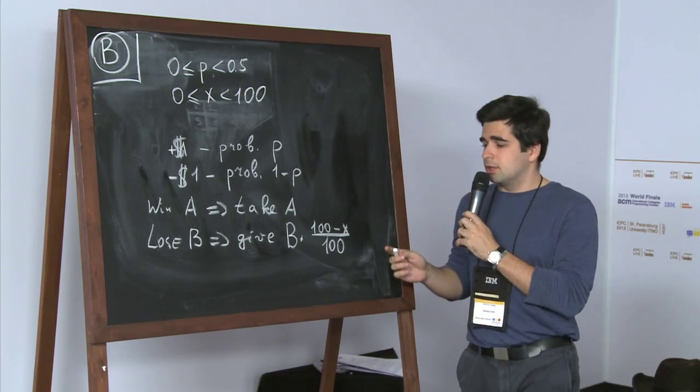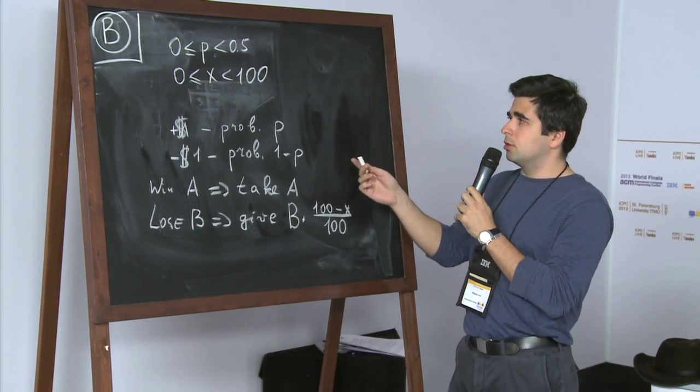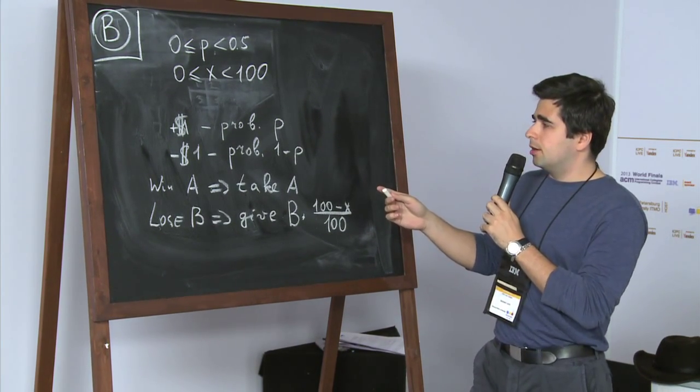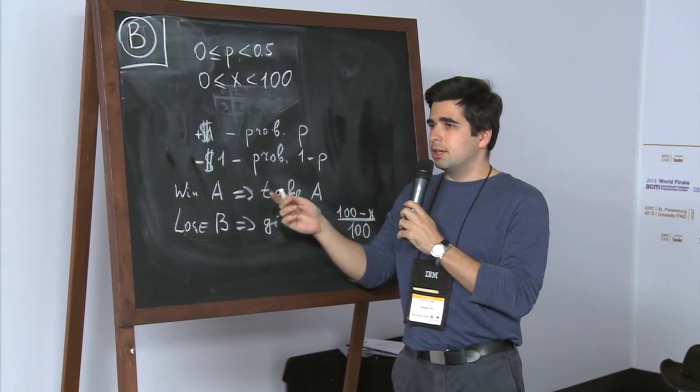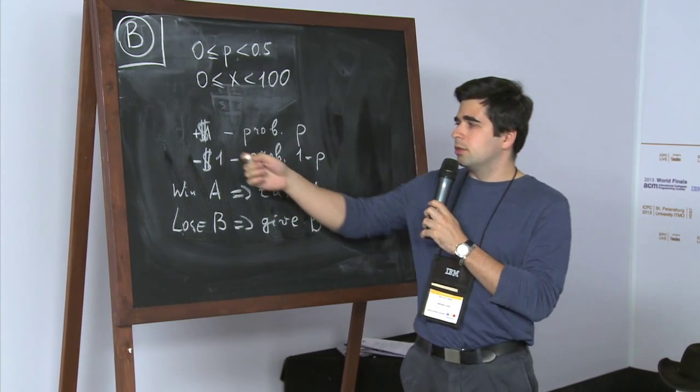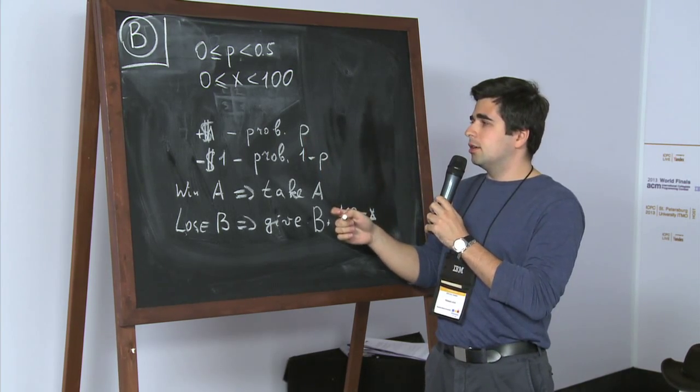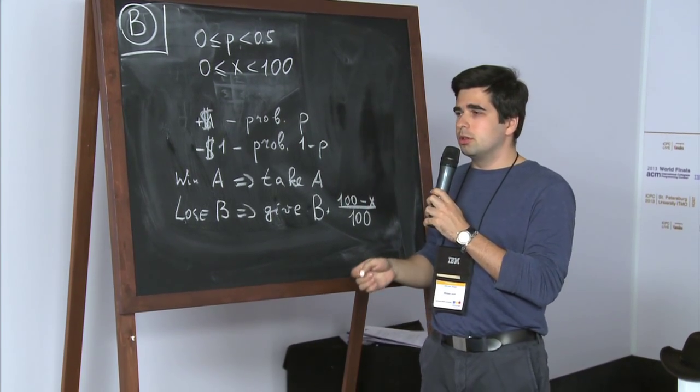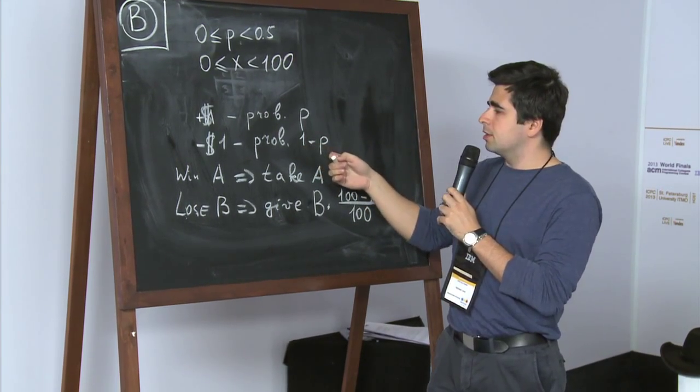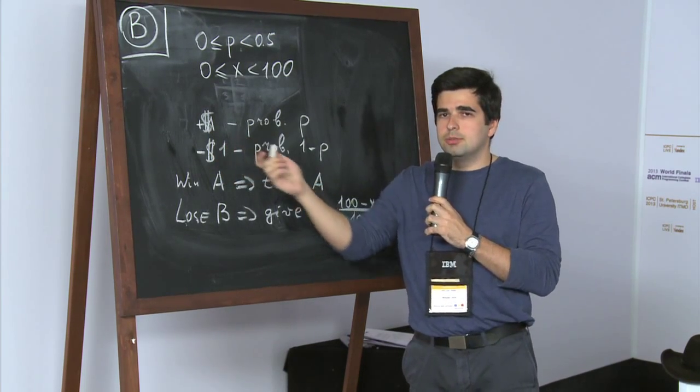The problem goes as this. There is a player and a casino, and he plays a single betting game where he bets one dollar. And with probability P he wins one more dollar, and with probability one minus P he loses his bet.